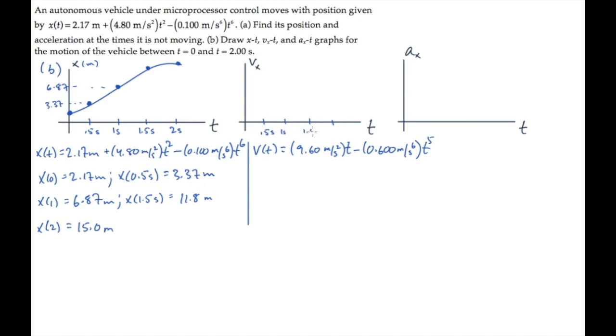We can mark off some times to calculate the velocities, and calculate them. At t equals 0, the velocity is 0. At t equals half a second, we get a velocity of 4.78 meters per second. I'll draw those here. And then we calculate the other values. At one second, the velocity is 9 meters per second.